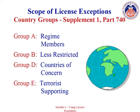License exception eligibility is limited by country. For ease of reference, countries are arranged into country groups. Countries may be listed in more than one group. Country limitations are generally described within the terms and conditions of a specific license exception. For example, a license exception may state that it only authorizes certain types of transactions with Group B countries. For a complete listing of countries in the country groups, please refer to Supplement 1 to Part 740 of the EAR.